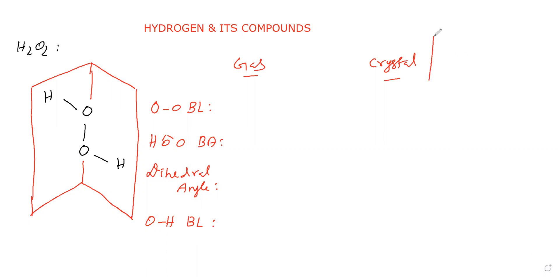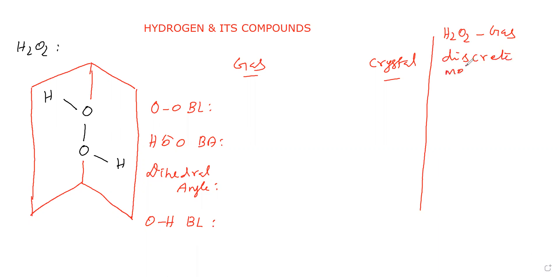In the gaseous state, hydrogen peroxide exists in the form of discrete molecules, that is, isolated molecules. Between hydrogen peroxide molecules, van der Waals forces are possible — that means instantaneous dipole-induced instantaneous dipole attraction is possible.